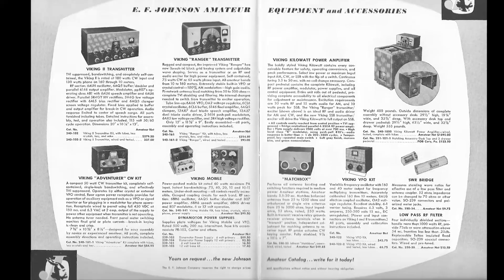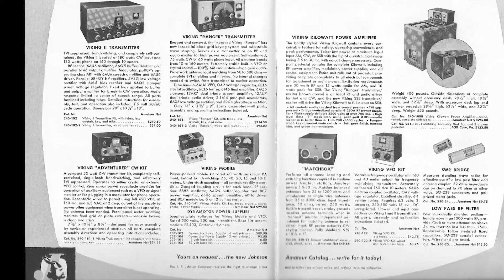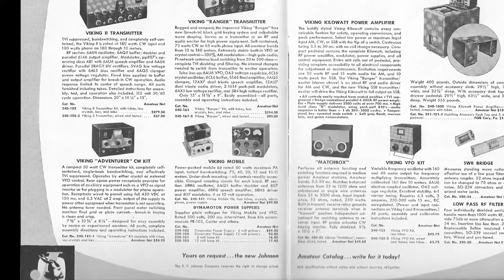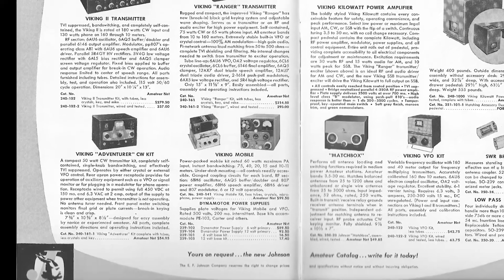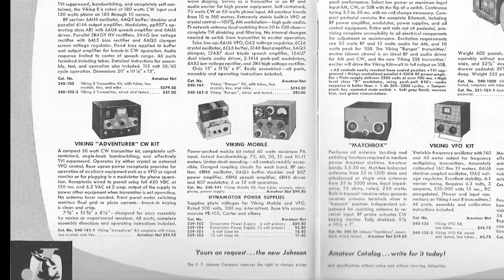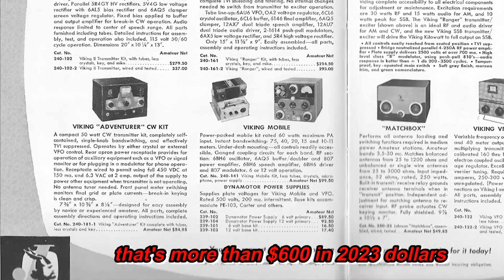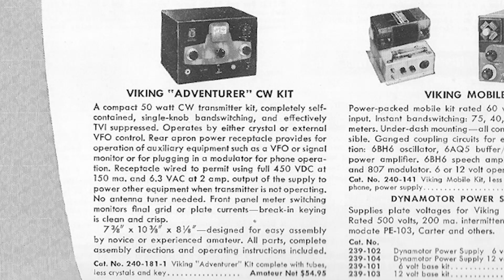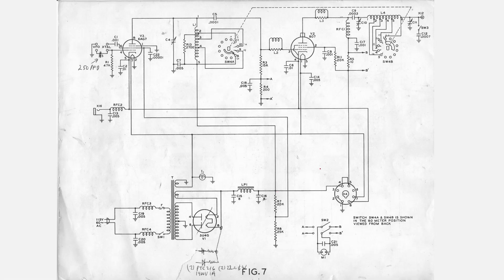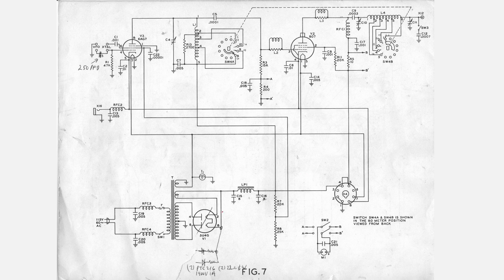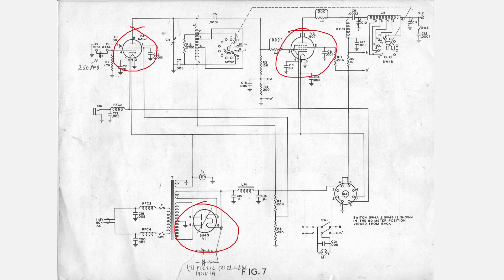Shortly after its production launch in 1955, the Viking Adventurer quickly became a popular entry-level amateur radio transmitter. Manufactured by the EF Johnson Company, at $54.95 it was their least expensive amateur transmitter. It was only available as a user-assembled kit, unlike its bigger brothers which were available as kits and as factory-assembled units. Its design is very simple, consisting of just three vacuum tubes: a 5U4G rectifier, a 6AG7 oscillator and buffer, and an 807 final amp.